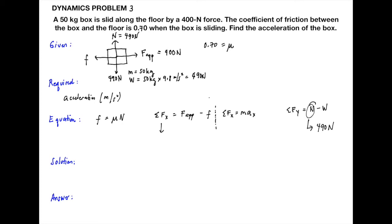Since the given values have only one significant figure, we round off to one significant figure. The final answer is 2 meter per second squared.